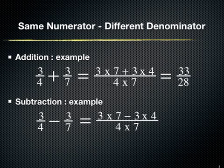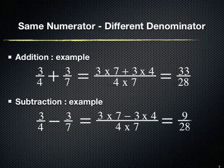As shown in the below diagram, the numerator is the subtraction of 3 multiplied by 7 and 3 multiplied by 4. The denominator is 4 multiplied by 7. Hence, the subtraction of the fractions is 9 upon 28.